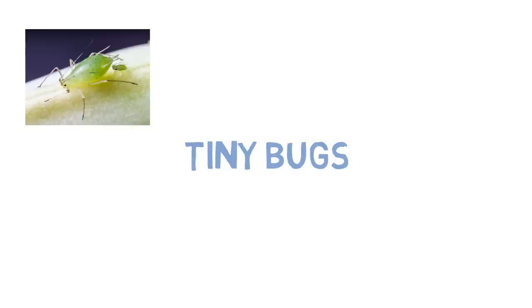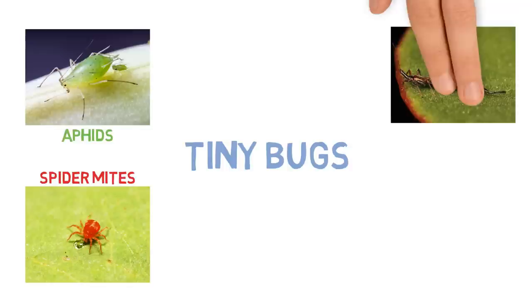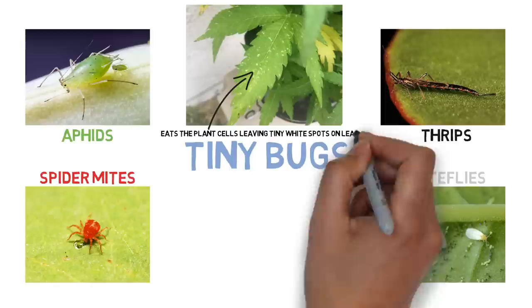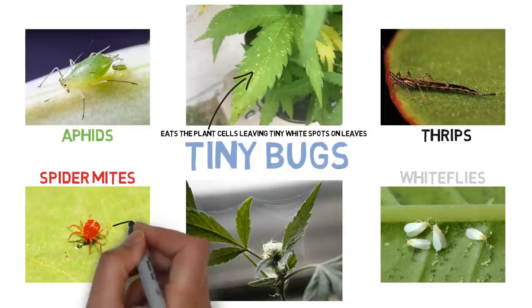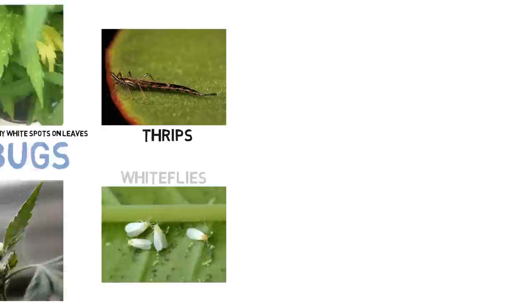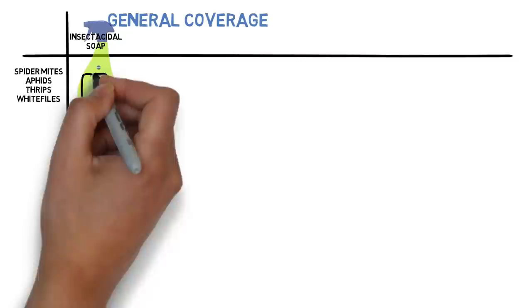Starting with the really tiny ones — bugs that eat the cells of leaves: spider mites, aphids, thrips, and whiteflies. If you notice tiny white specks on your leaves, little white dots moving on the underside, or small flies flying around, you likely have one of these. Spider mites are the scariest — on top of damaging the plant, they'll cover everything with webbing. The other ones can grow wings as adults, allowing them to migrate plant to plant, so stop them as soon as possible. Treatment options depend on your plant's growth stage, since some products can affect bud taste, so don't spray the entire plant once it's in the flowering stage.